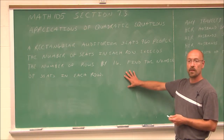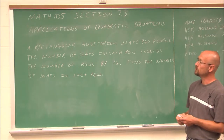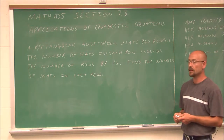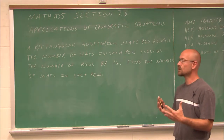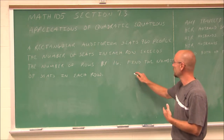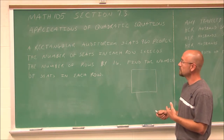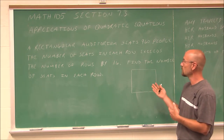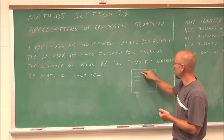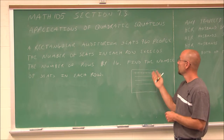So we're going to look at some application problems here. The first one states that a rectangular auditorium seats 960 people. The number of seats in each row exceeds the number of rows by 16. Find the number of seats in each row. Maybe it would be helpful to draw an illustration. We have rows in this auditorium, and each row has so many seats.